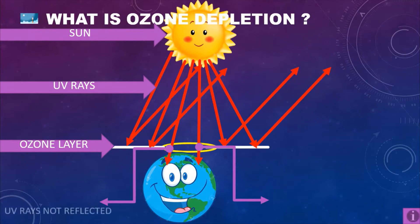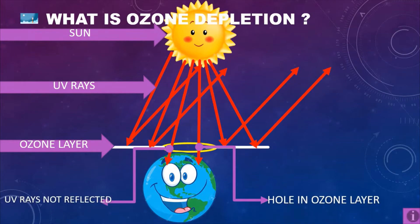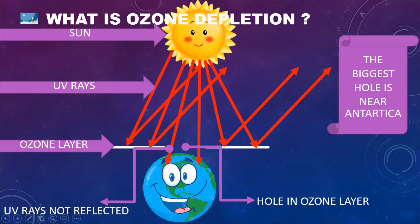What is ozone depletion? Some of the UV rays are reflecting and others are not, and there is a big hole in the ozone layer. Fun fact: the biggest hole is near Antarctica. I would never go to Antarctica because UV rays will come to the Earth and you could get skin diseases!